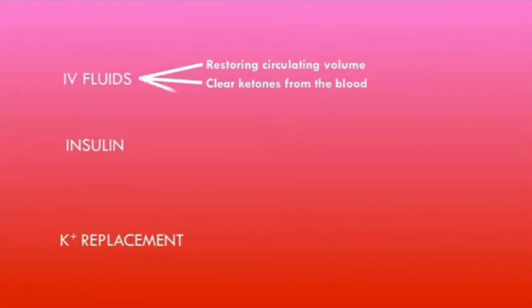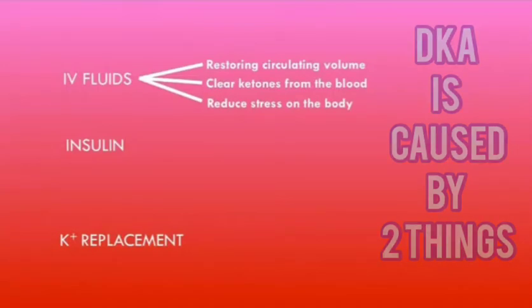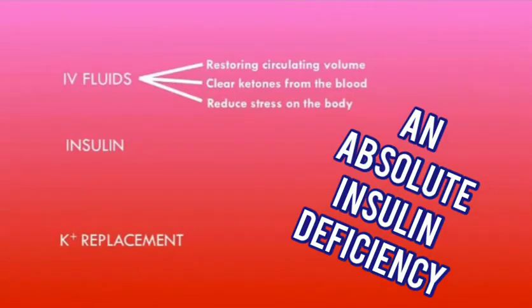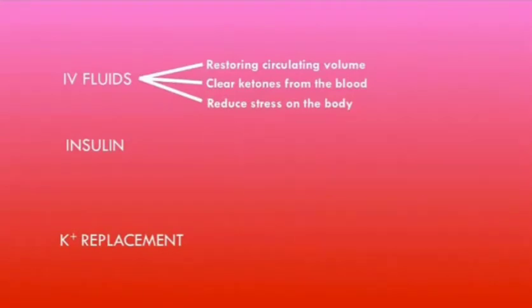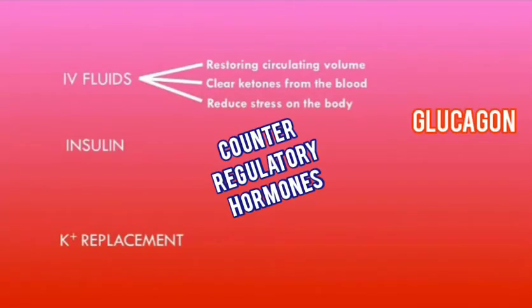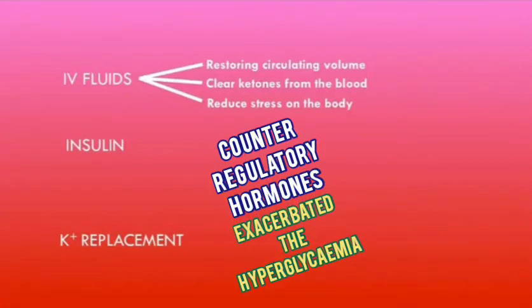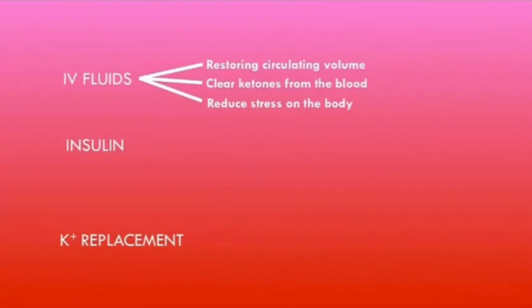Giving intravenous fluids will also help to reduce the stress on the body. DKA is caused by an absolute insulin deficiency and a stress state, which leads to production of counter-regulatory hormones such as glucagon and cortisol that exacerbate hyperglycemia. By giving intravenous fluids, this reduces the stress by restoring circulating volume and perfusing tissues, thereby helping to reduce the hyperglycemia.